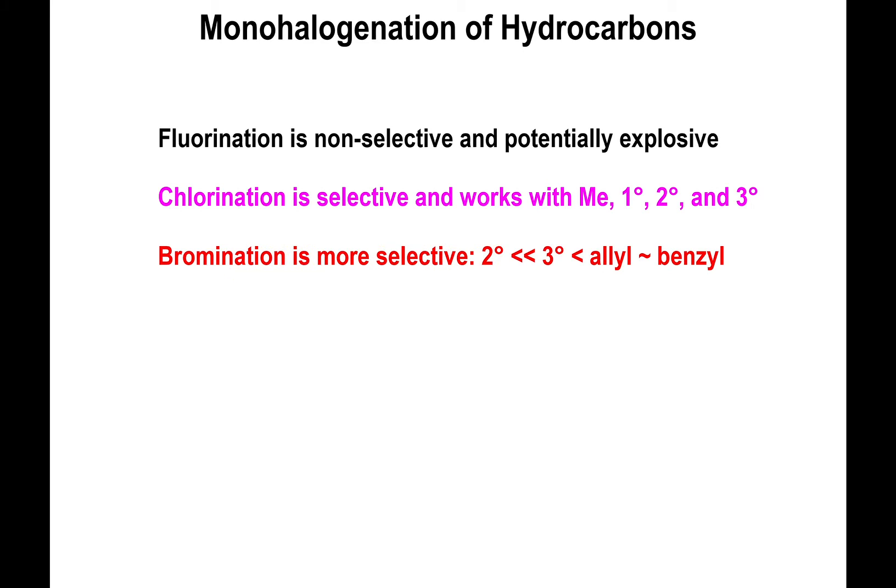Bromination on the other hand: primary and methyl CH bonds are a no-go. Secondary can happen to a small extent, but the preference for bromine is really to react with tertiary CH's, allylic CH's, and benzylic CH's.